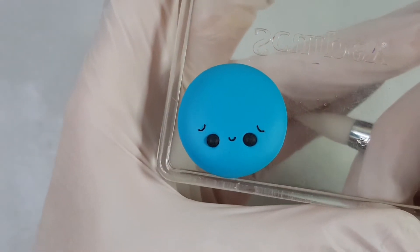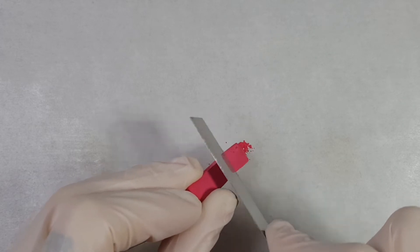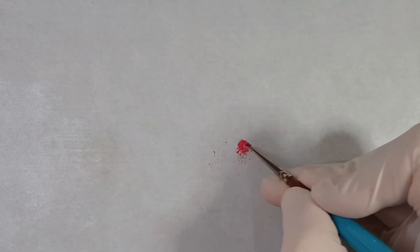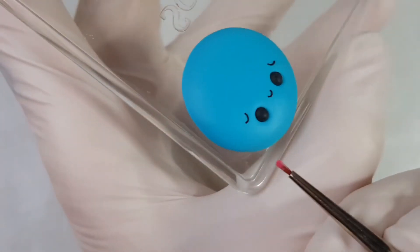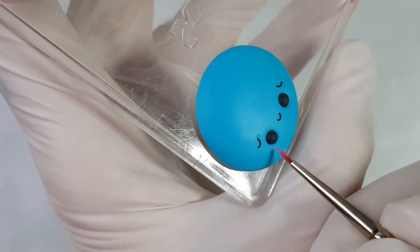The last part is the little blushing cheeks which I like to use chalk pastels for. With a small paintbrush, dab a tiny amount on. Remember, less is more.